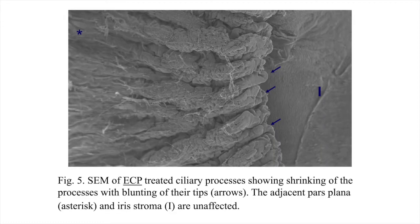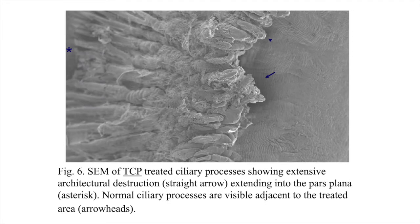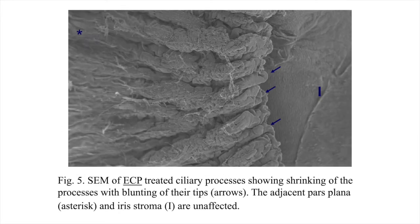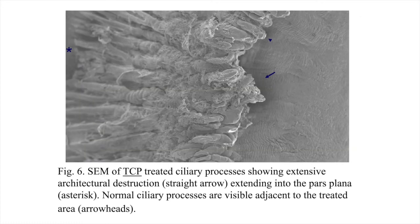This tissue is shown post-ECP treatment, and the only thing that you're seeing that's different is blunting of the tips of the ciliary processes. Otherwise, you don't see a great deal of destruction of the surrounding tissues. Compare that to the image post-transcleral cyclophotocoagulation, where the arrow is indicating an area that has been severely disrupted by the diode laser treatment. You can see the amount of destruction in ECP versus that seen in transcleral CPC.